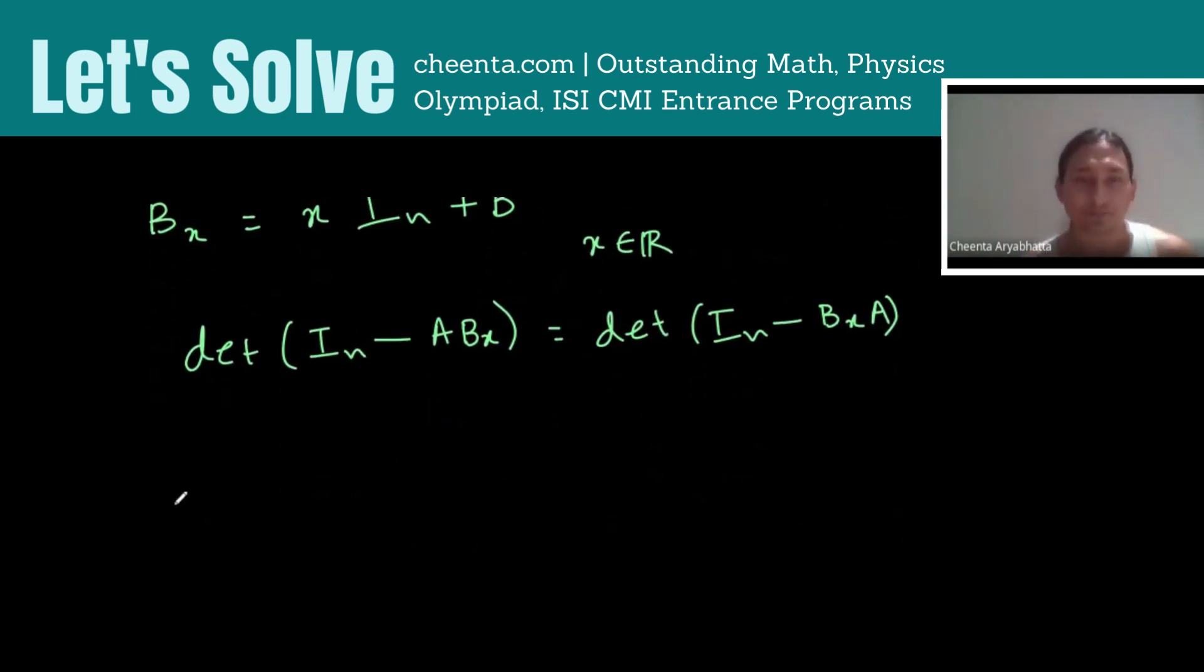Now, note that BX is invertible if and only if determinant of BX is non-zero. This is our observation number one.